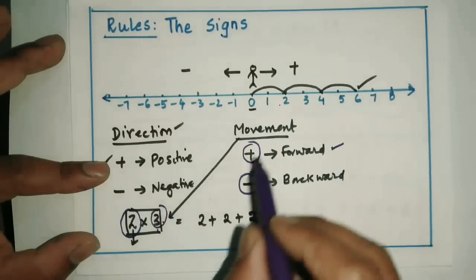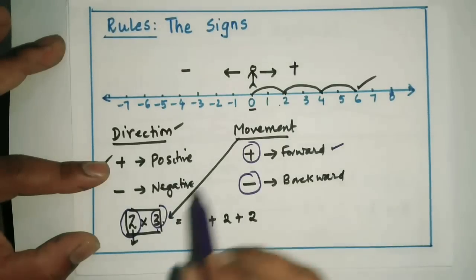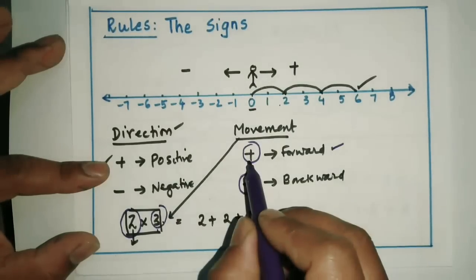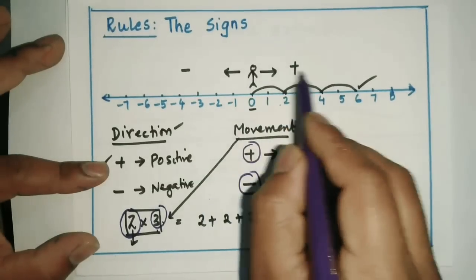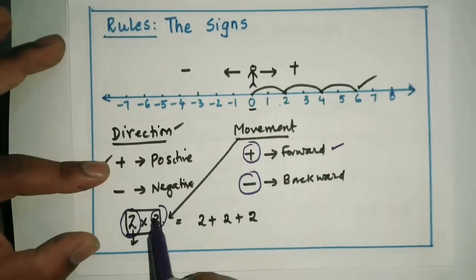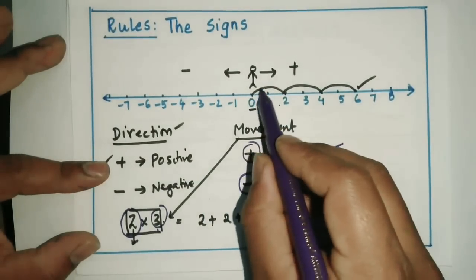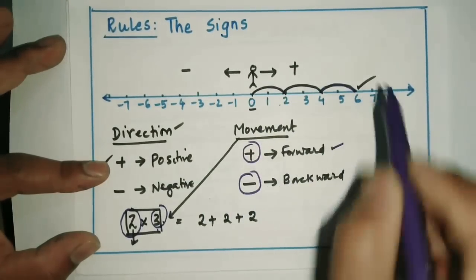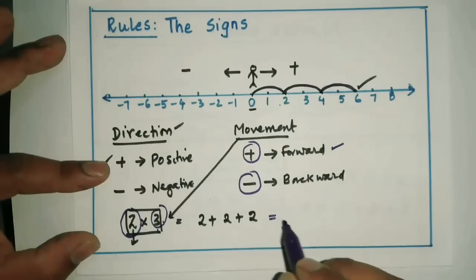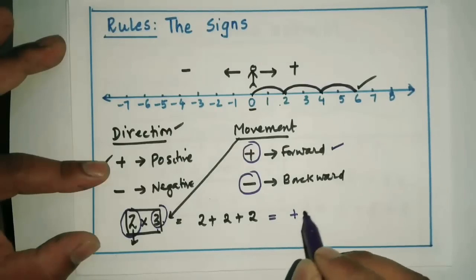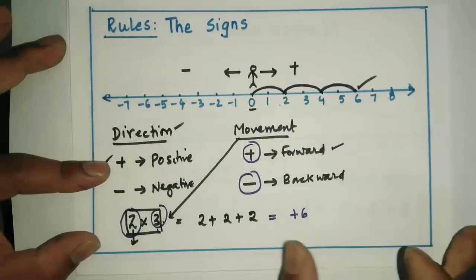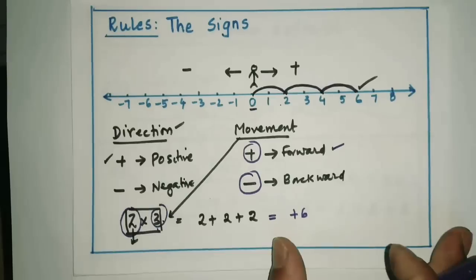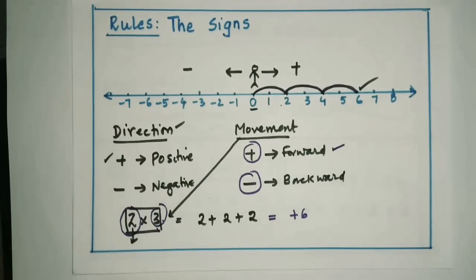Since 3 is also positive, the movement is positive — meaning you are moving forward. Therefore you move 2 forward three times and your answer is 6. So 2 into 3 is plus 6.